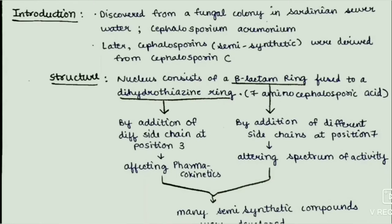Now we will discuss the structure. The nucleus consists of a beta-lactam ring fused to a dihydrothiazine ring, that is of 7-aminocephalosporanic acid. By addition of different side chains at position 3 of the dihydrothiazine ring, it affects the pharmacokinetics. And by addition of different side chains at position 7 of the beta-lactam ring, it alters the spectrum of activity. Thus many semi-synthetic compounds were derived.